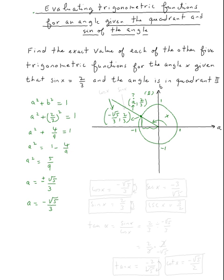Now the rest is easy. Cosine of x is the a-value: −√5/3. Sine of x is 2/3. Tangent is sine over cosine: (2/3) ÷ (−√5/3) = (2/3) × (3/−√5) = −2/√5.